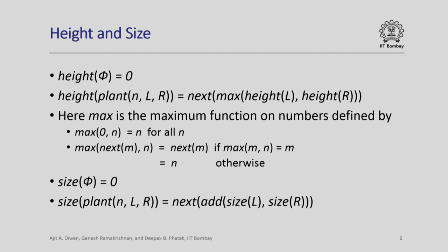Here max is the maximum function on numbers, which we can define as: max(0, n) = n for all n, and max(next(m), n) = next(n) if max(m, n) equals n, otherwise it equals n. Similarly, we can define the size of a tree — the total number of nodes. Size of the empty tree is 0, and size of the tree obtained by planting l and r at node n is next(add(size(l), size(r))), adding one for the node n itself.